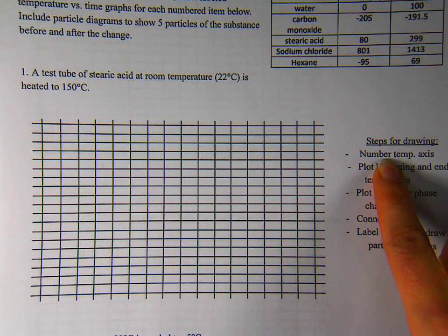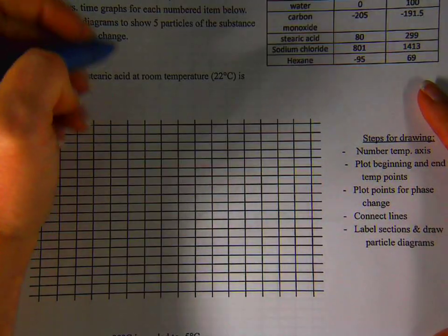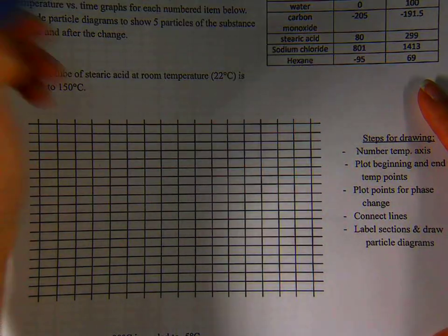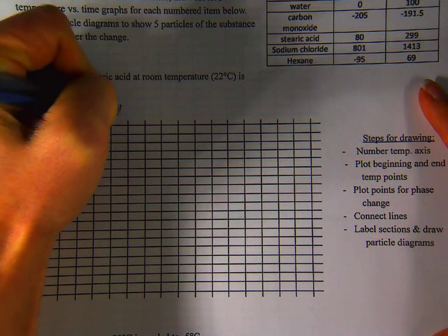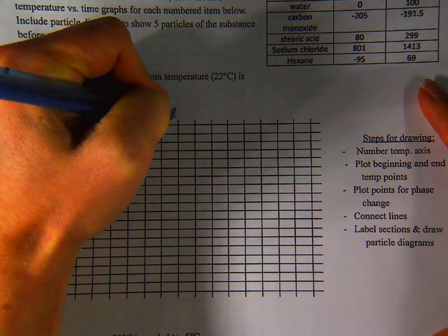I have given you some steps for starting over here. So the first thing to do is to label your axes and your graph title. We'll call this heating curve of stearic acid because we're heating the substance. If I were cooling it, I would label it cooling curve.